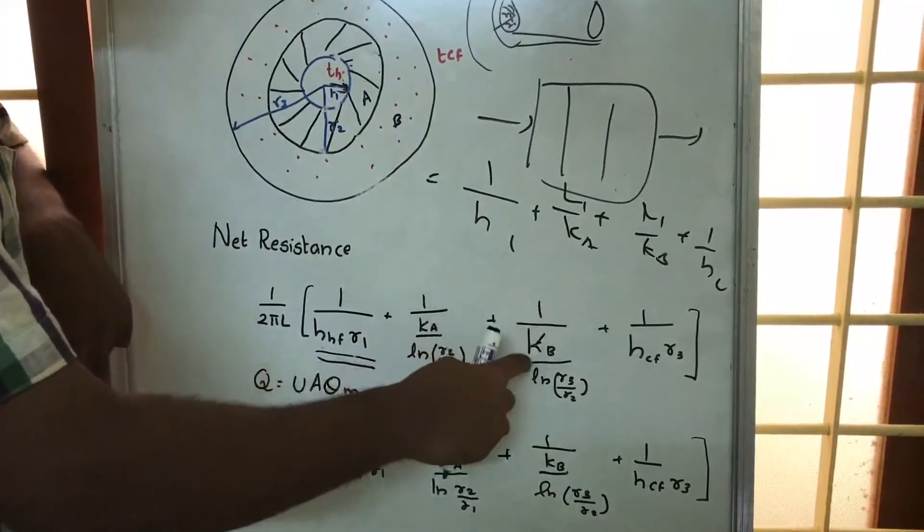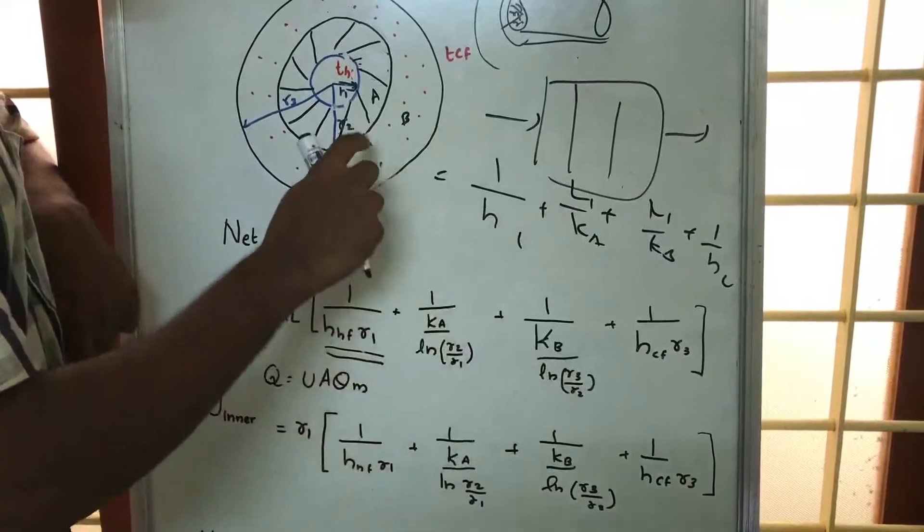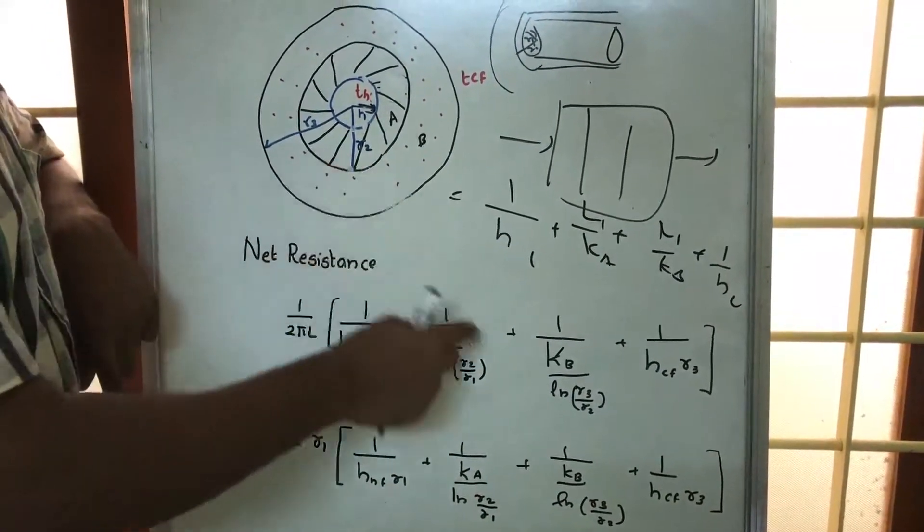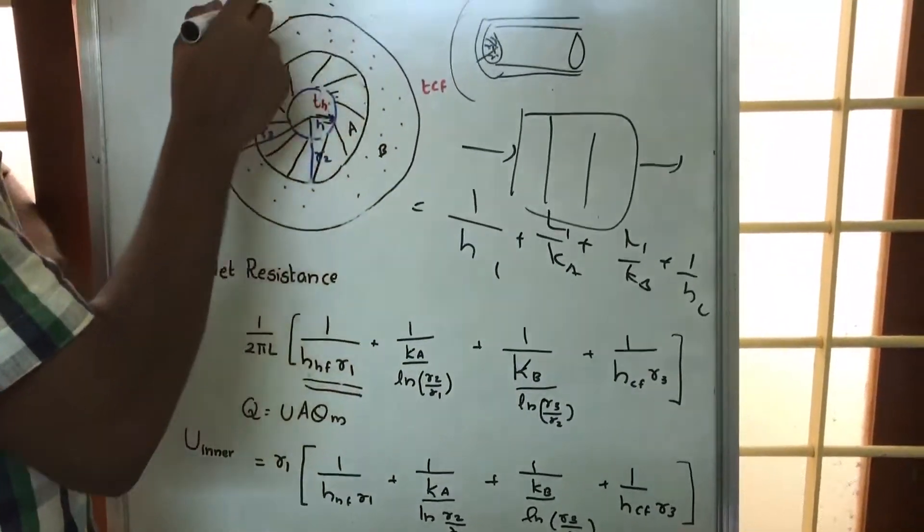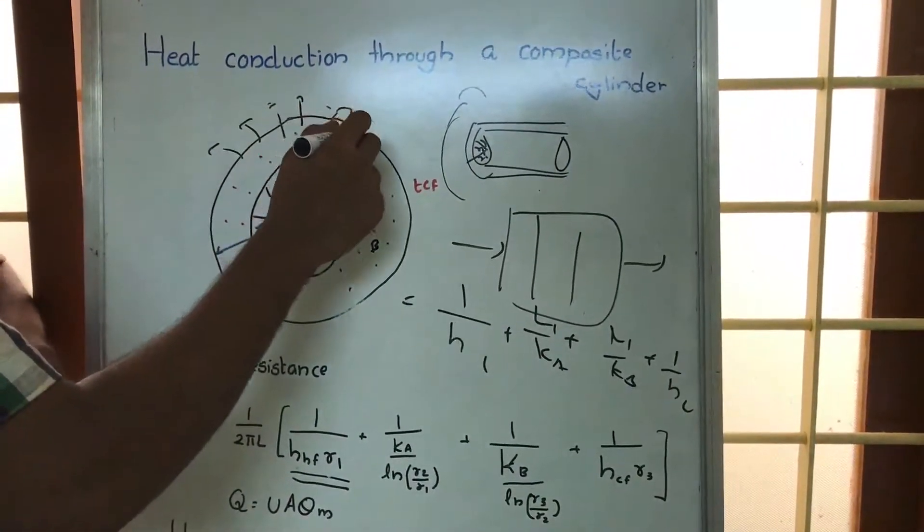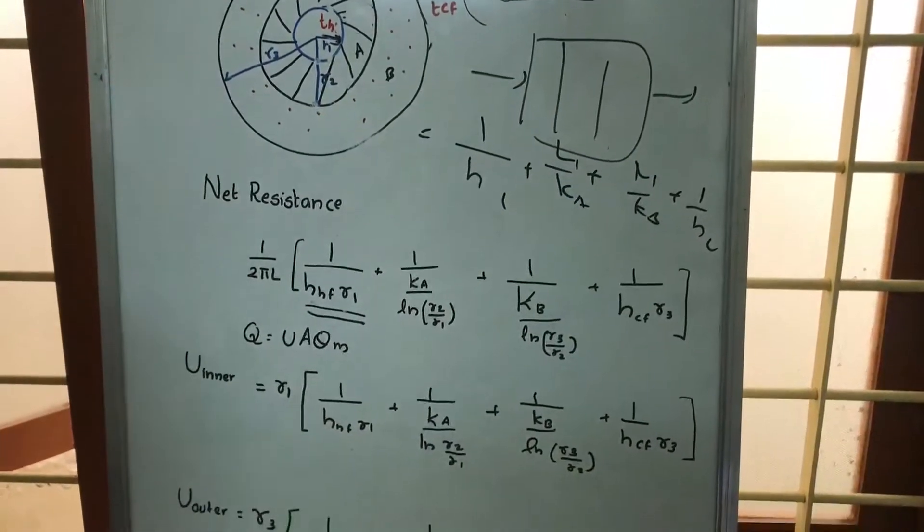Then comes material B, 1 by KB log R3 by R2. R3 is the outer radius and R2 is the inner radius, plus 1 by HCF R3, where HCF is the convection heat transfer coefficient at the outside surface. So this is the net resistance.